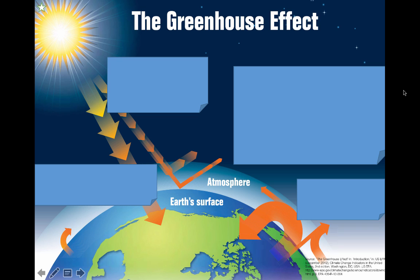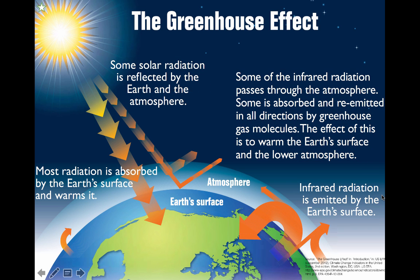It's a good idea to quiz yourself every now and then. We just talked about the greenhouse effect and the enhanced greenhouse effect. Here's a graphic by the Environmental Protection Agency, published in 2012. I've covered up the explanations. If you look at the sun, the earth, and these arrows, try to pause the video and explain what these arrows are showing — use as much vocabulary as you can to explain how the greenhouse effect works. You do need to quiz yourself to find out if you understand this stuff. Now I'm going to reveal these boxes so you can take a look at some of the information.